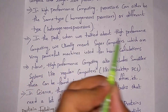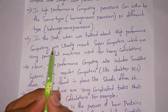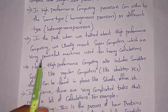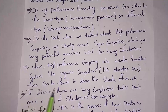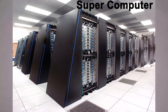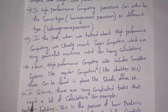In the past, high performance computing usually meant supercomputers — very powerful machines used for heavy calculations. Now, high performance computing also includes smaller systems like regular desktop computers found in schools and offices. In older days only supercomputers could perform high calculations, but at present even regular computers like laptops and desktops are considered high performance computers.